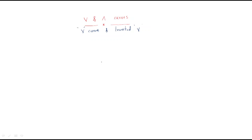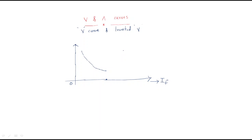V curves represent the relation between field current and armature current. The x-axis shows the field current and the y-axis shows the armature current. This curve looks like a V-shape, which is why it is called the V-curve.